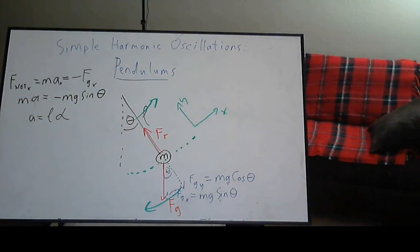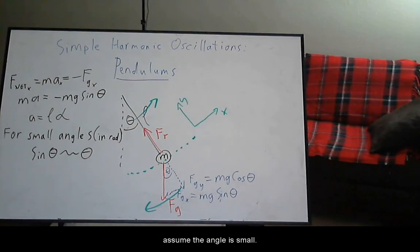We will convert our kinematic quantities to polar coordinates. We will also assume that the angle is small. Under small angle approximation, sine of theta is approximately theta. Let's substitute this in.